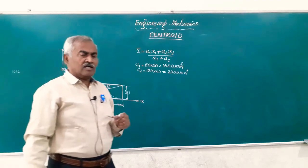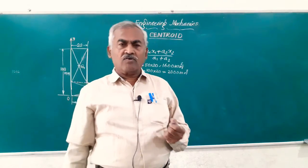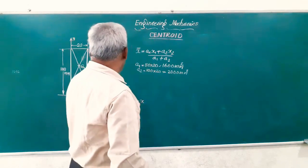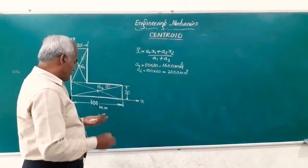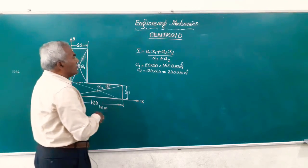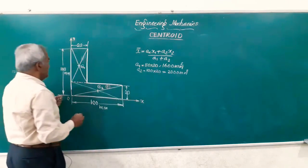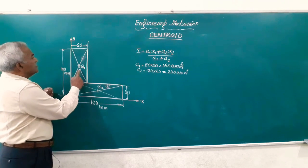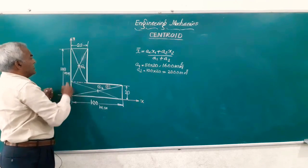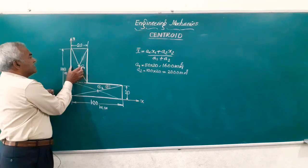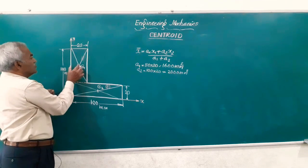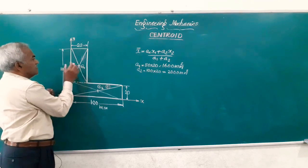g1 and g2 are the centroids of the rectangle 1 and 2. Friends, now we want to have what is x1, x2 etcetera. x1 is the distance of g1 from the y-axis, that is this quantity which is 20 by 2, that is 10.